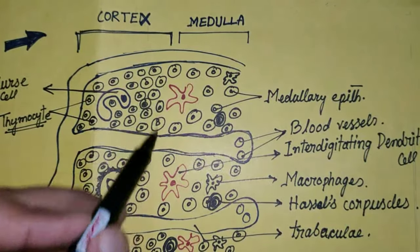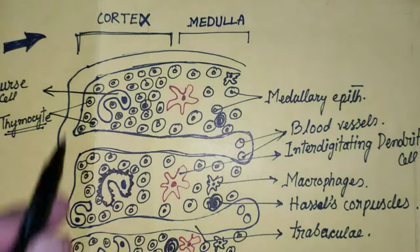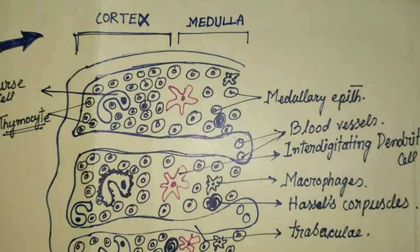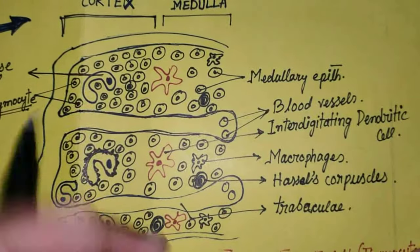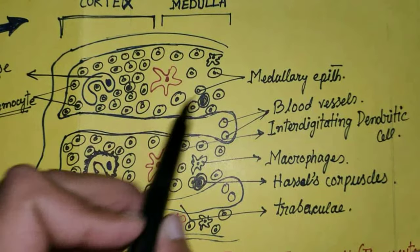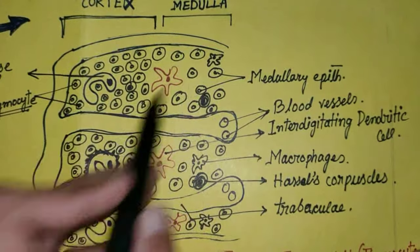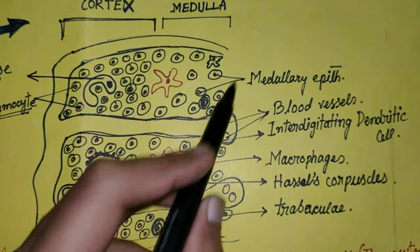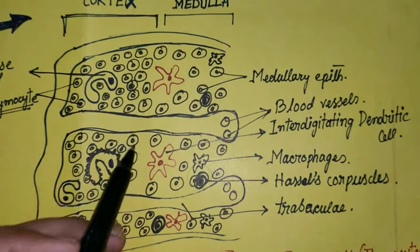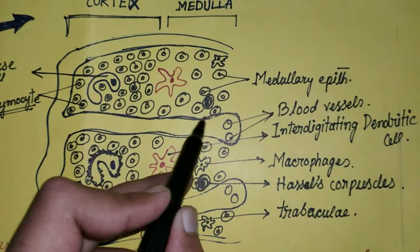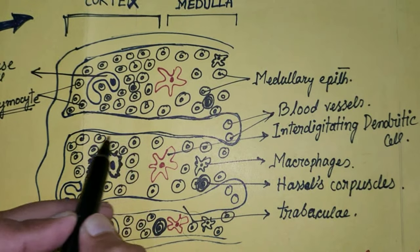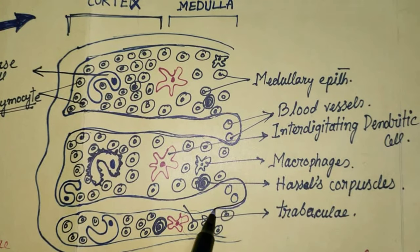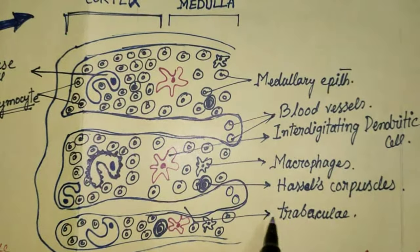The thymus gland actually decreases with age. The inside portion is the medulla. The thymus gland is organized into several lobules — we can see these lobules here. The thymus gland is divided inside by lobules, and these lobules are separated by connective tissue stripes, which we call trabeculae.